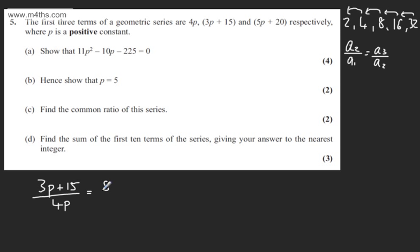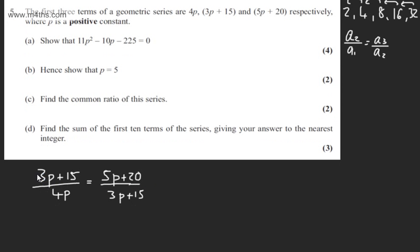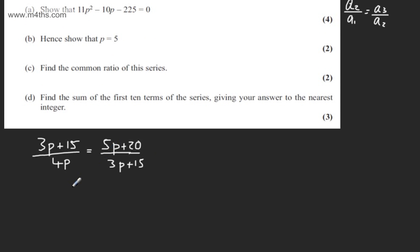that must equal 5p plus 20 divided by 3p plus 15. At this stage I'm going to multiply both sides by 4p and both sides by 3p plus 15.